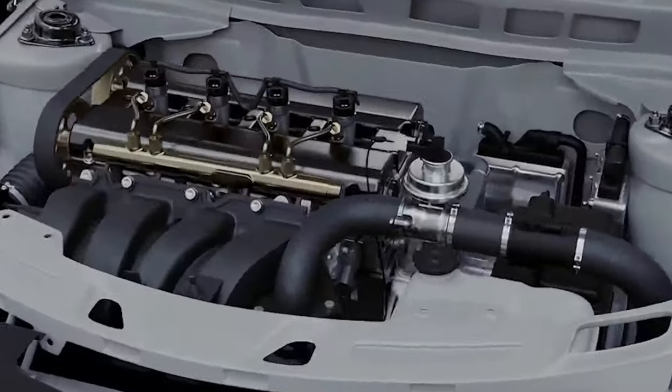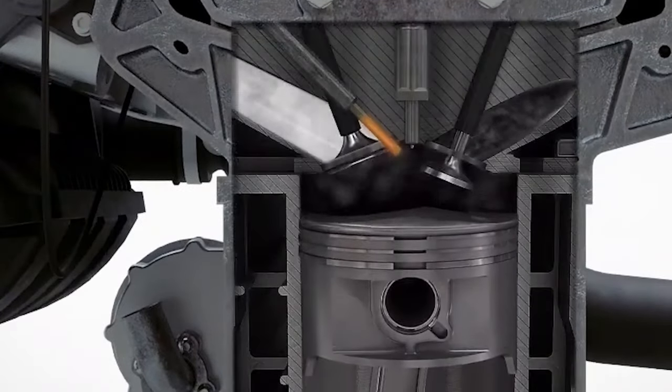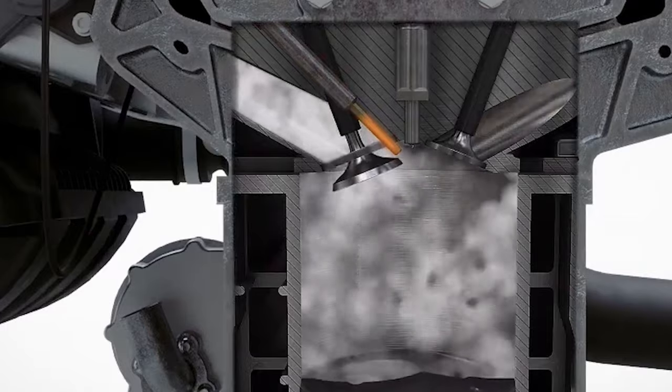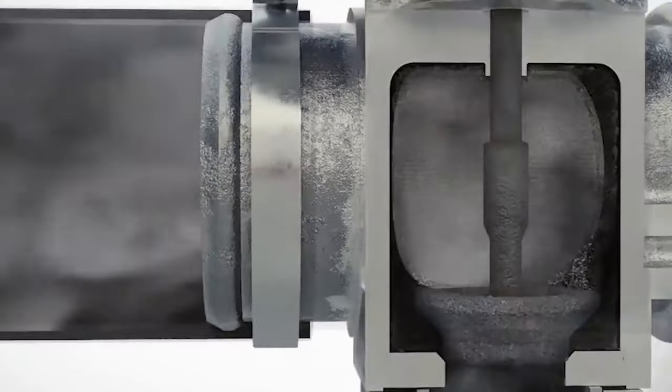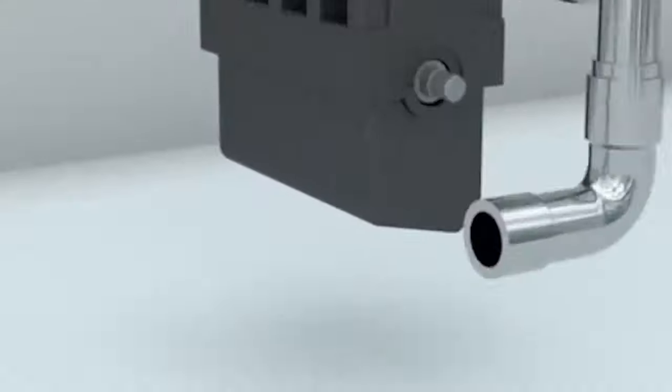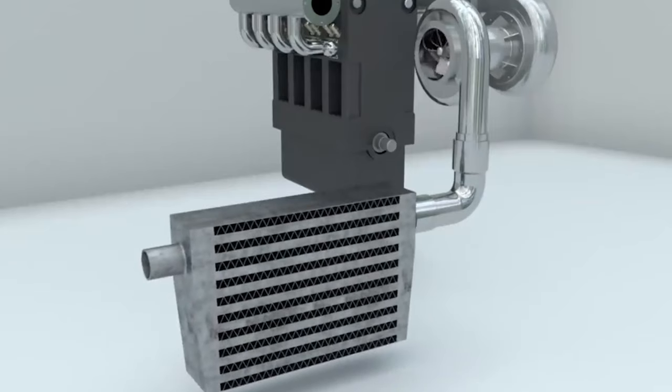These inert gases prevent the combustion process from reaching the high temperatures at which hazardous gases are released, to further reduce the combustion temperature. An EGR cooler is sometimes added to the components before the air is mixed in.